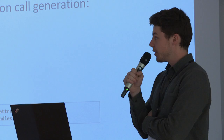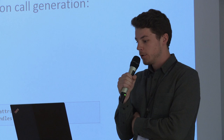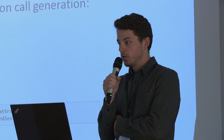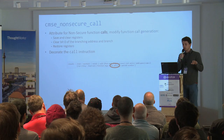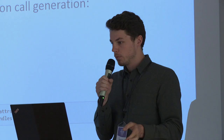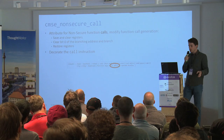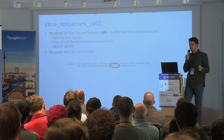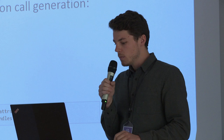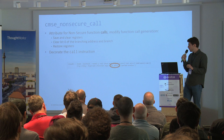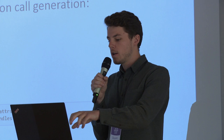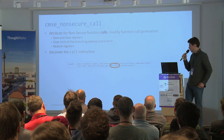Now where things get more complex: the other attribute, CMSE non-secure call, is a bit different because it's not an attribute placed on top of functions, but on top of function pointers. What it does is: you are in secure state and want to call a non-secure function, so you have to save your secure registers, push them on the stack, clear them so you don't leak information, call the function, and when you return, restore them. Since it's an attribute on a function pointer, what it really decorates in the LLVM IR is a call instruction. Looking at the LLVM IR manual, the call instruction can be decorated with function attributes.